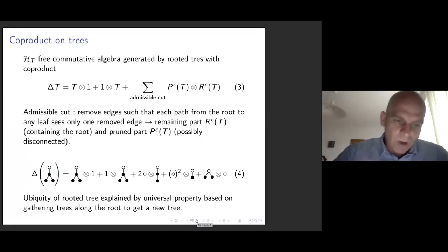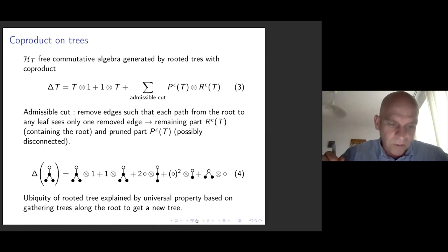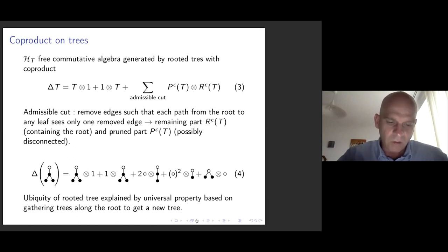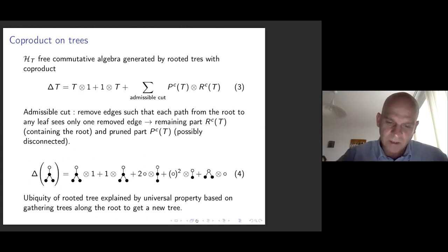The Hopf algebra of rooted trees is again a free commutative algebra generated by rooted trees, with a coproduct always of the same form: t tensor 1 plus 1 tensor t, then a sum over admissible cuts. An admissible cut is a removal of edges such that every path from the root to the leaves sees only one removed edge. The tree is then separated into several parts: one part, RC of T, which contains the initial root, and several pruned subtrees — the trees that fall once you have cut.